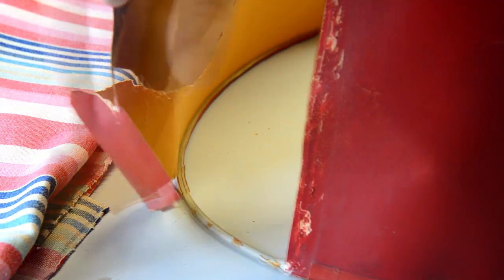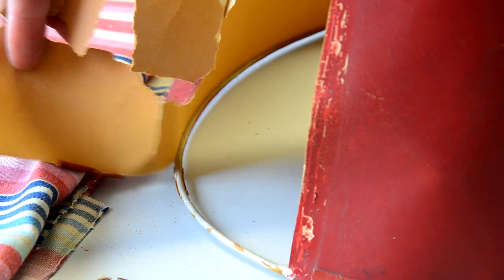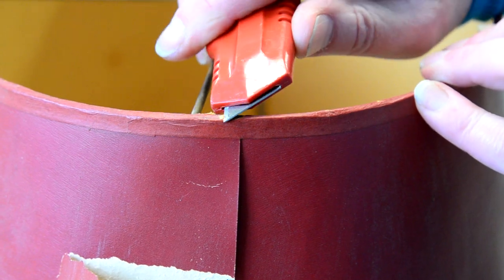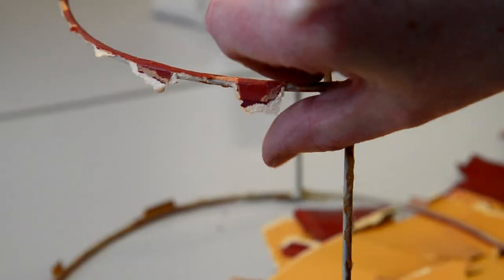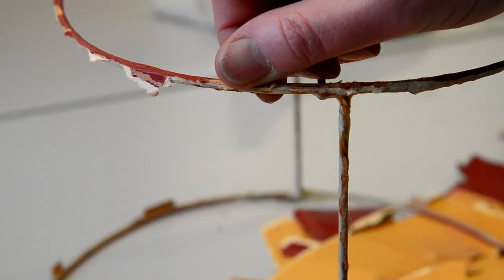Recovering a lampshade is rather like doing up an old house. It looks fine from the outside, but once you start tearing into the work you may discover some unpleasant surprises in the foundations, as was the case in this lampshade.